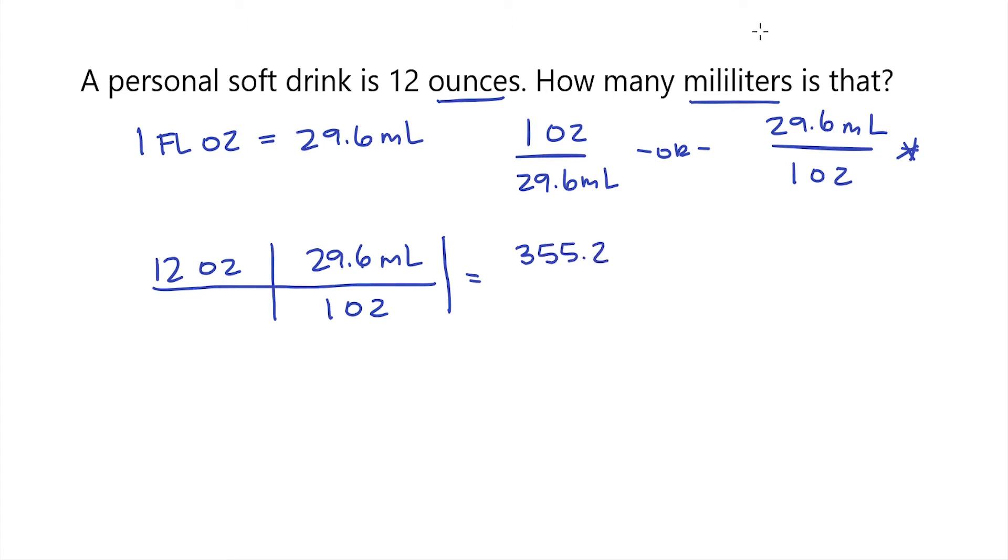Now I need to multiply my units. So I have ounces times milliliters. And then on the bottom, I just have my one ounce. Now because I have ounces on the top and the bottom, those are going to cancel each other out.